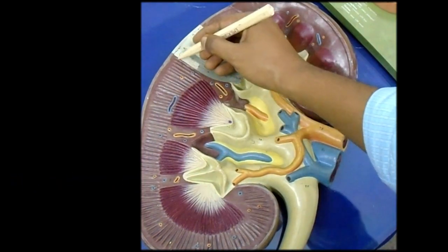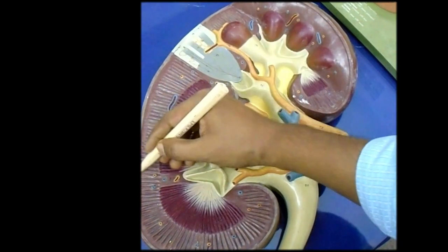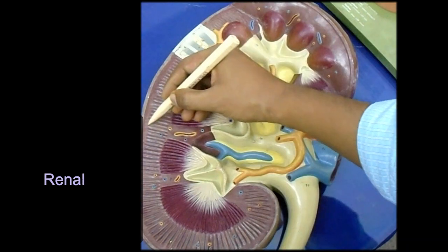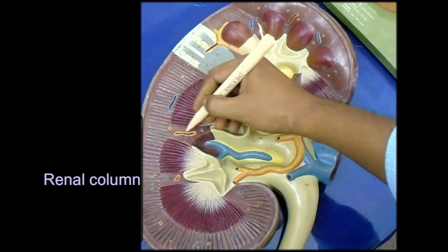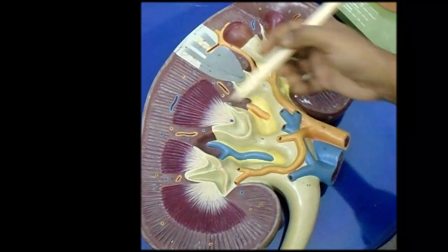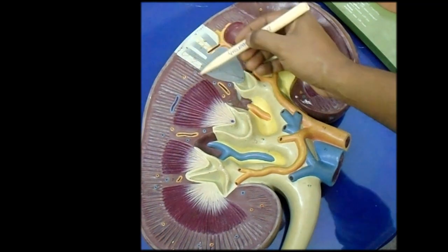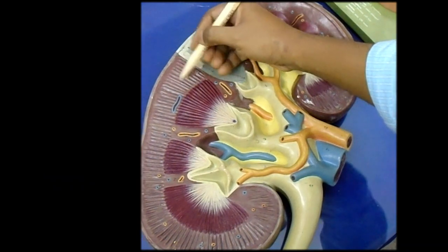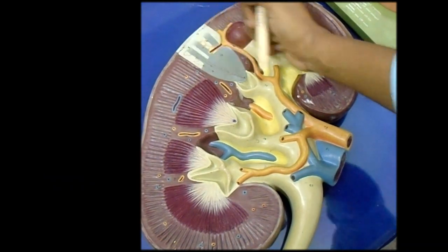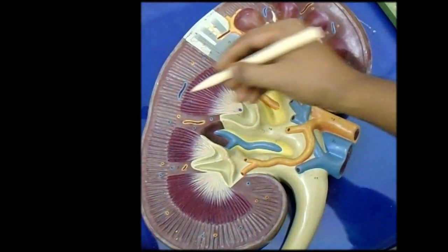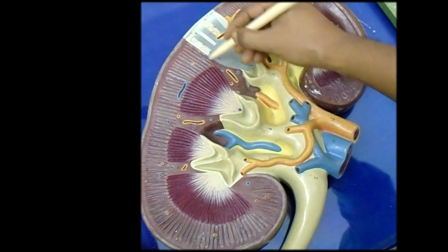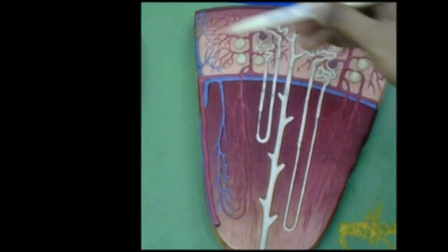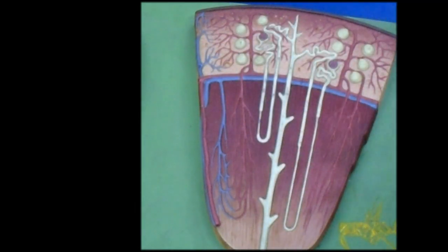In between the two lobes of the kidney, the cortical tissue is termed the renal column, and it extends up to the medulla. Each arch consists of numerous medullary rays and a convoluted part. We will now cut one lobe of the kidney and show it in a larger view.